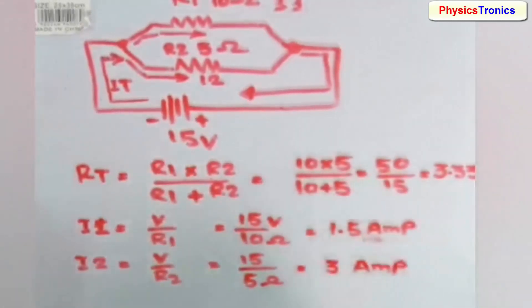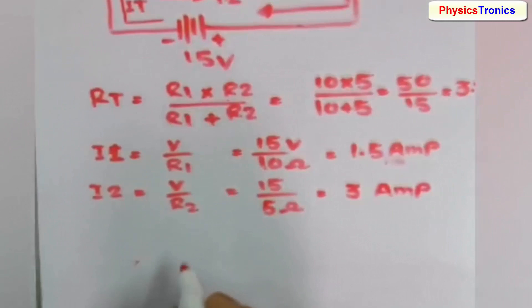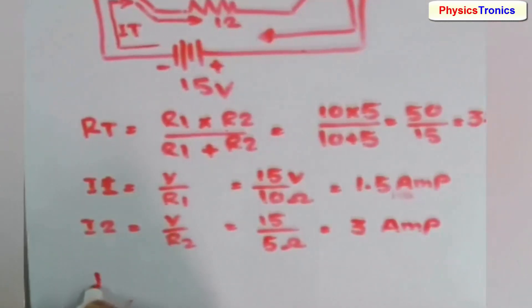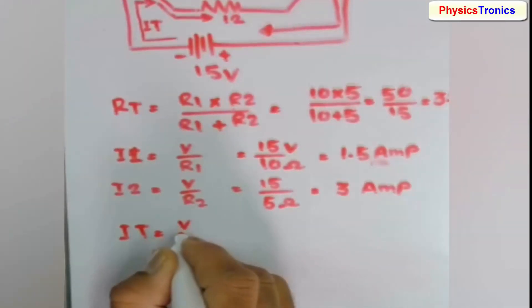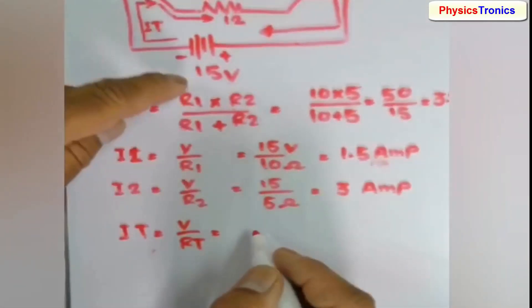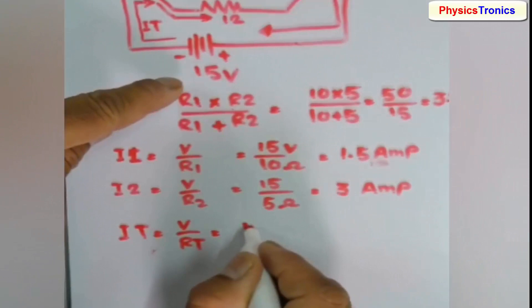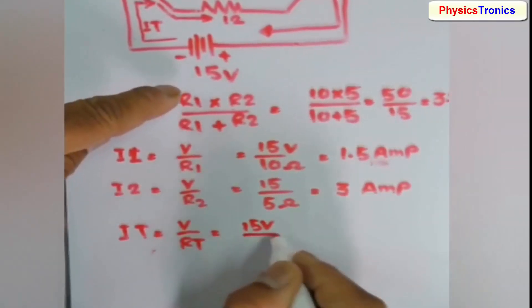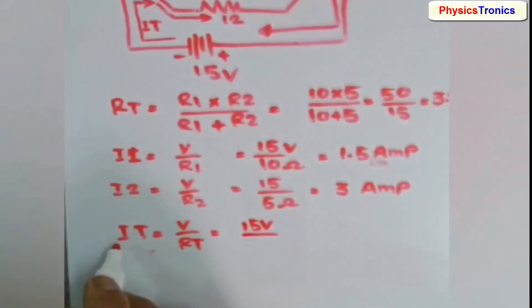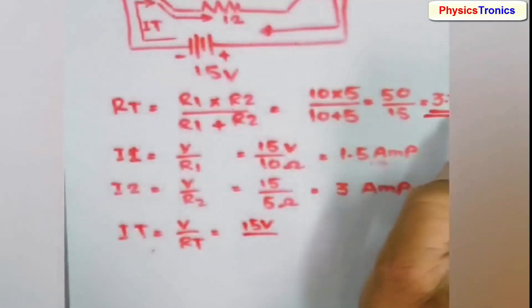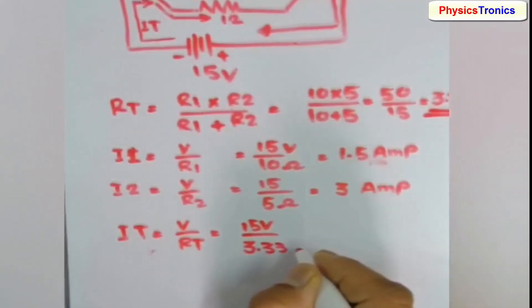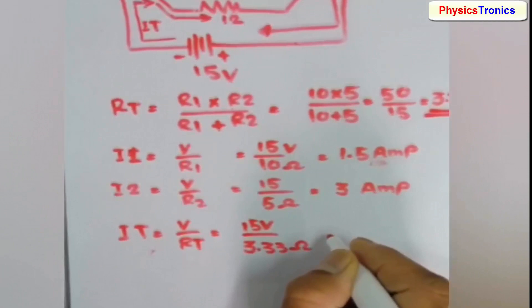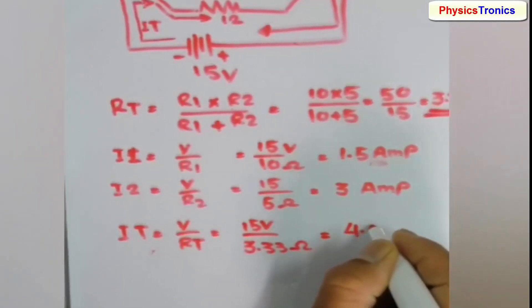Now we will check our total current IT. We will verify with Ohm's law: IT equals V over R, where R is RT. We calculated RT equals 3.333 ohms. So 15 volts divided by 3.333 ohms equals 4.5 amperes.